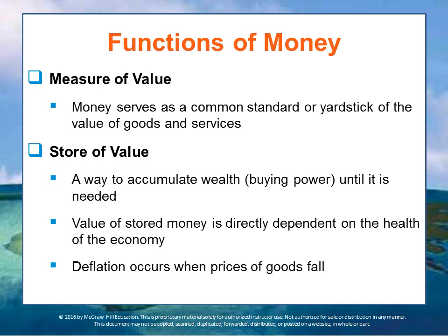Money serves as a way to accumulate wealth or buying power for later use — it is a store of value, because we can accumulate it until we later decide we want to use it. If, due to rapid inflation, all prices are doubling every year, then the purchasing power, or the value of money stuffed in a mattress, would fall by half.